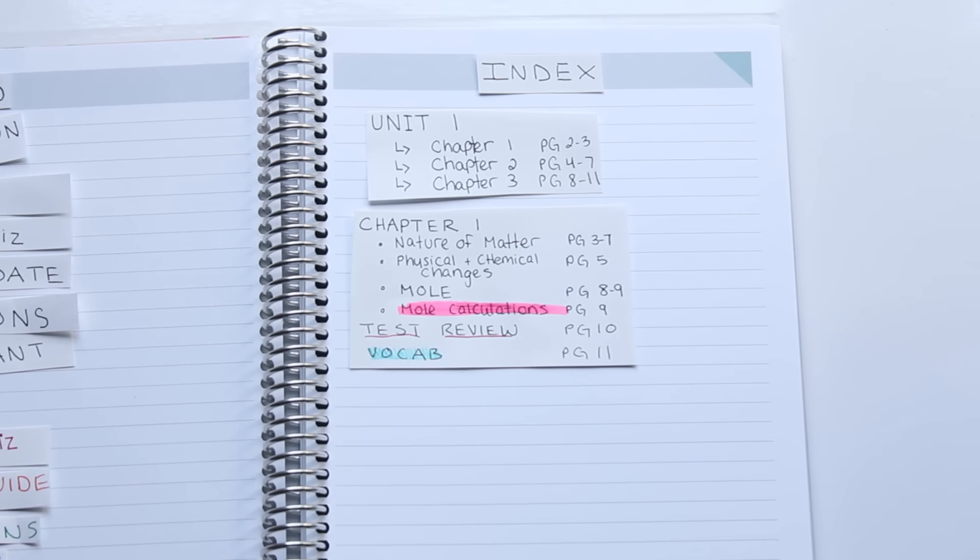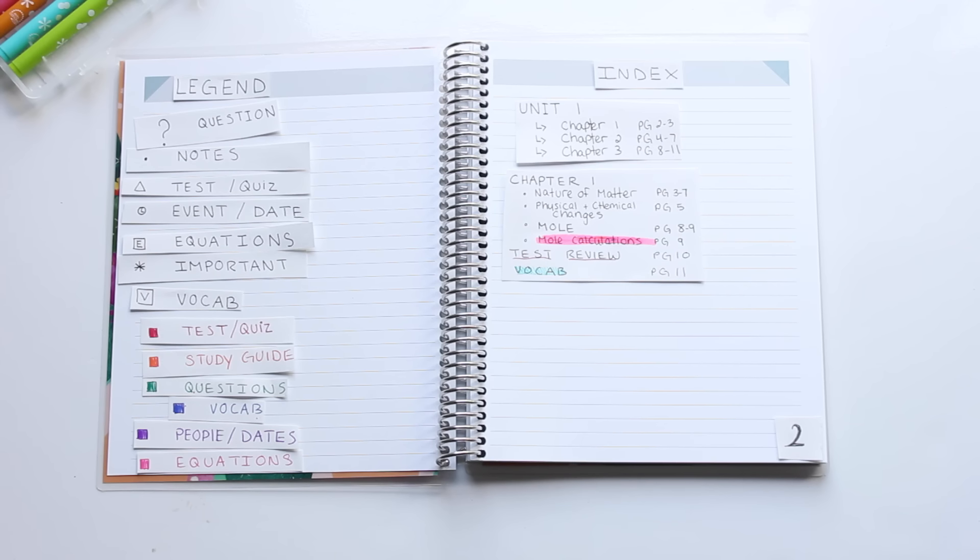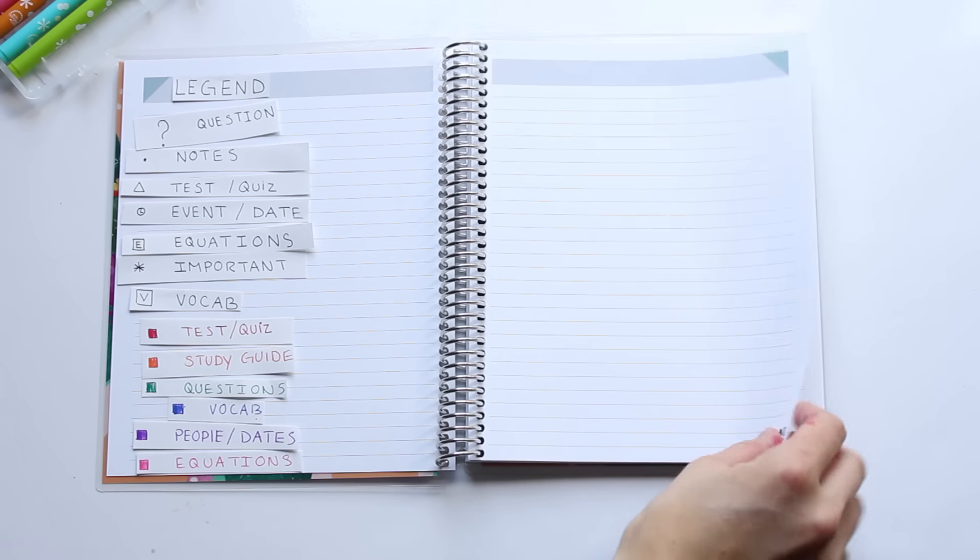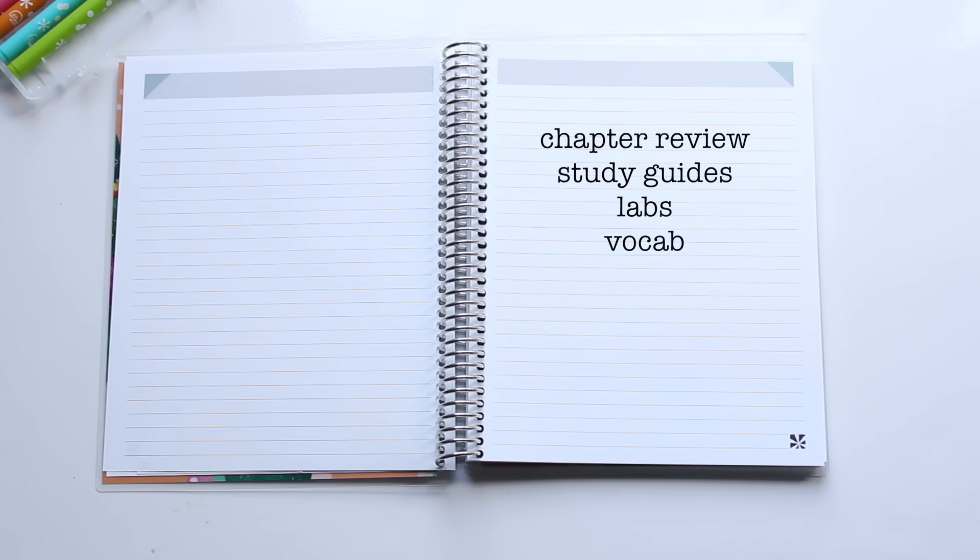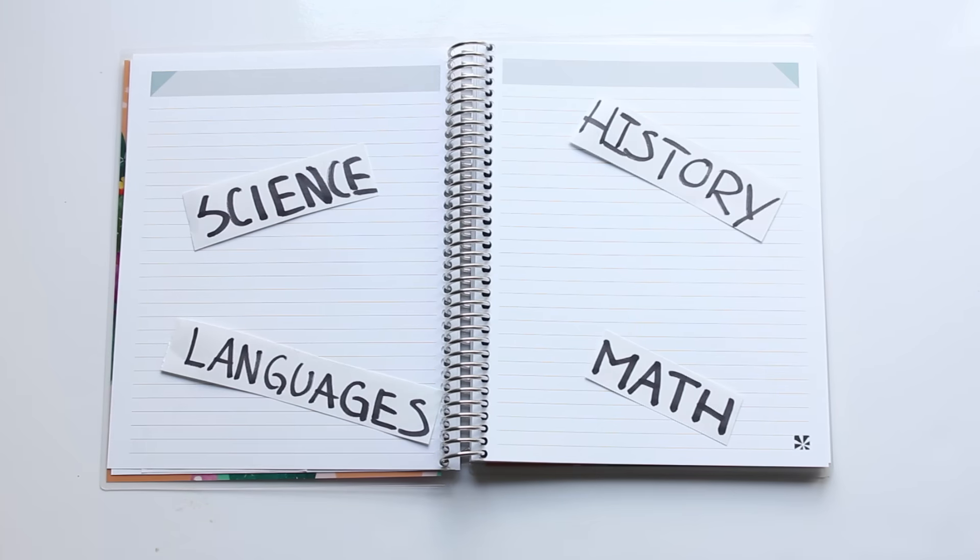Let's do a little recap so you understand how this legend and index system works. Don't forget to add your page numbers as well. So the legend and the index can be used for things like notes, separate classes, chapter reviews, study guides, question pages, not understanding things, exam reviews, labs, vocab, creative writing, movie notes, infographics, and pictures. This works for every type of class that you have.